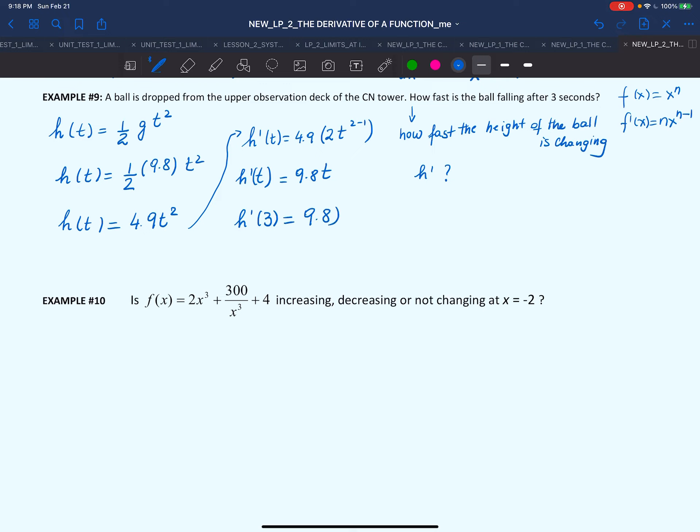h'(3) = 9.8 * 3, which equals 29.4. So the rate of change of height will be 29.4 meters per second. What is the meaning of this? It means that 3 seconds after the drop, the speed in that very moment is 29.4 meters per second. If it continued with the same speed, that would have been the actual speed, but it doesn't.